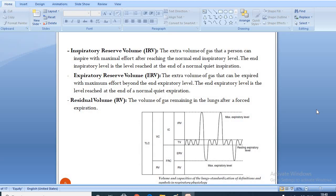Alveolar ventilation is the volume of fresh air entering the alveoli with each breath. Inspiratory reserve volume is the extra volume of gas that a person can inspire with maximal effort after reaching the normal end inspiratory level. The end inspiratory level is the level reached at the end of a normal quiet inspiration.